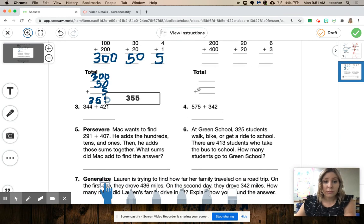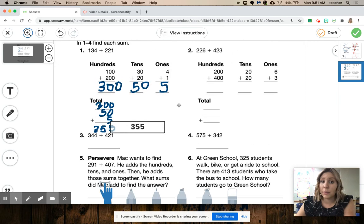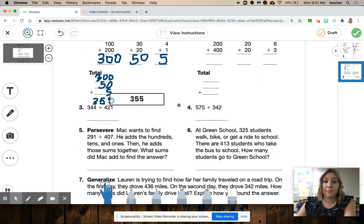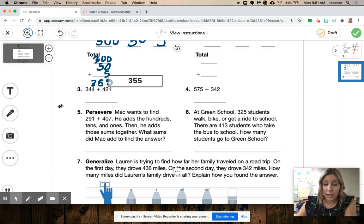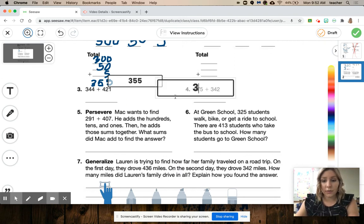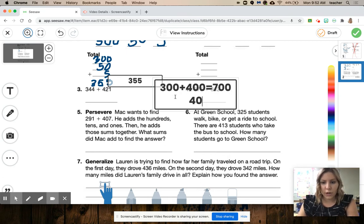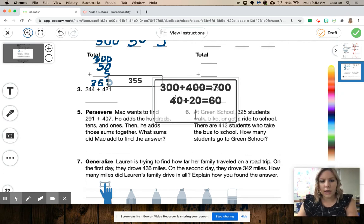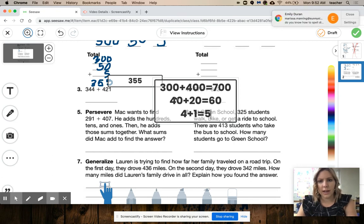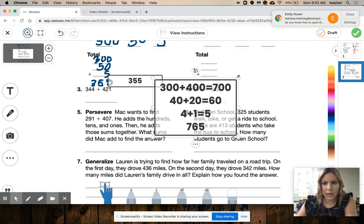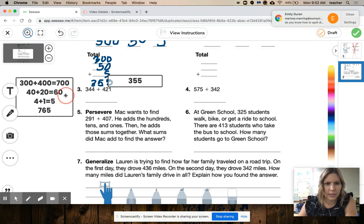So you're going to do that for 1 and 2. 3 and 4, it gives you the lines, but you still have to show the expanded algorithm, okay? It may not give you the lines to do that, but you can do that on the side. So 344 plus 421. So I can say 300 plus 400 is 700. 40 plus 20 is 60. And 4 plus 1 is 5. And then when I add those together, it's 765, okay? I can make it smaller. I can put it off to the side if I need to for number 3. Same for 4, okay?